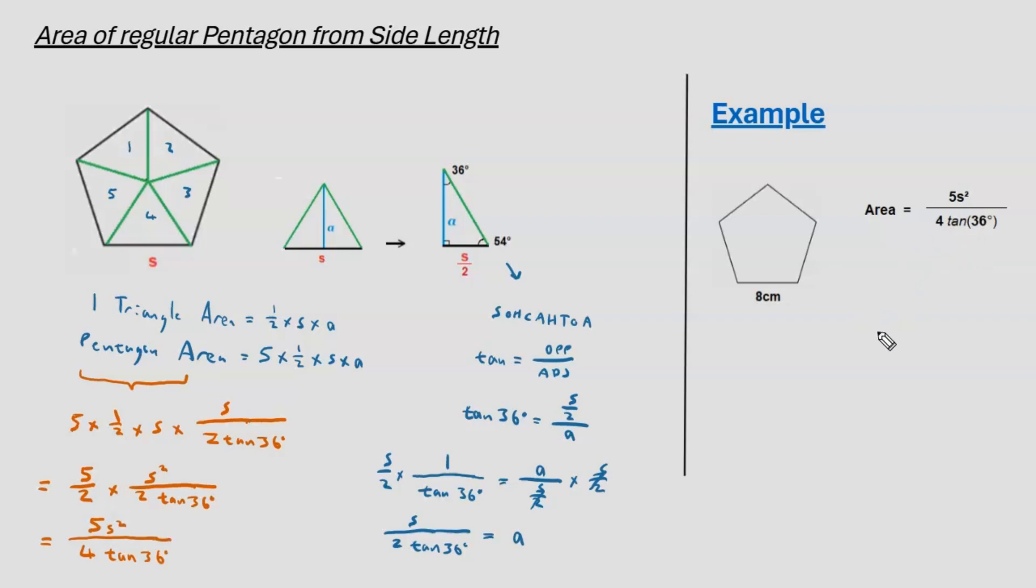So, let's go through this example and see what value we get for the area of this regular pentagon. The side length is 8 centimeters, so 8 goes where S is. Tan 36 stays below. So, on top we have 320.